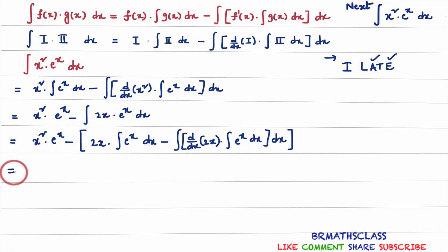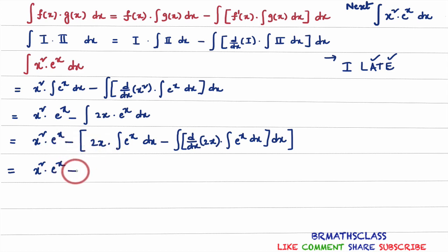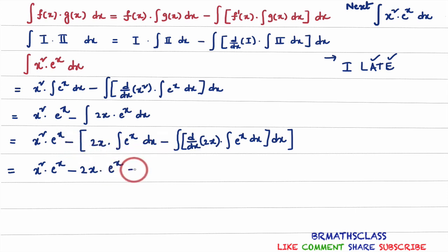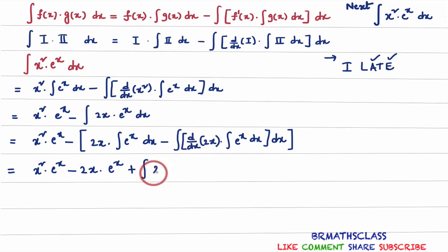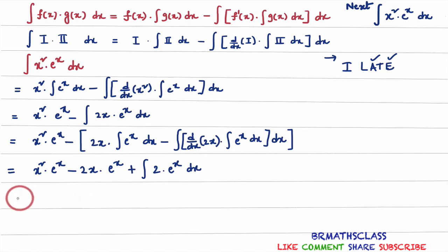If we simplify this further: x squared into e power x. Now multiply with this minus — you will get minus 2x into integral of e power x dx. Easiest formula: integral of e power x dx is e power x. Here, minus of minus is plus. We know that derivative of 2x is 2. So: 2 into integral of e power x dx equals e power x.